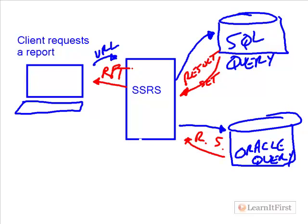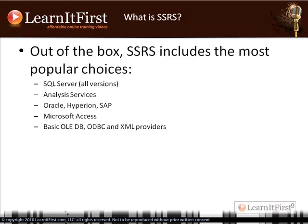The client only had to connect to Reporting Services — Reporting Services managed all of the rest of it. I'm not going to get into the security details of which account actually ran the SQL query right now; we'll talk about that in security in chapter three and in chapters four and five when we define our data sources. For now, just keep this as a generic, general idea of how it all works. As the course develops, we'll zoom into the various areas.